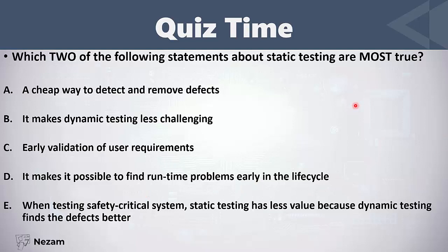Answer D: it makes it possible to find runtime problems early in the life cycle. This is wrong — static testing does not involve any type of runtime. Answer E: when testing safety-critical systems, static testing has less value because dynamic testing finds defects better. This is wrong — in safety-critical systems, static testing is very important and both static and dynamic testing are important. So the correct answers are A and C.